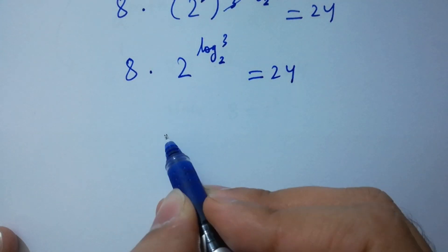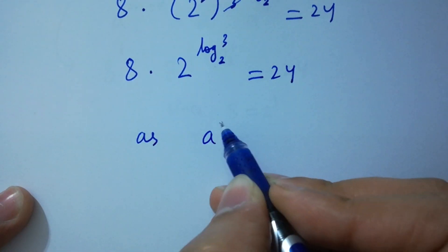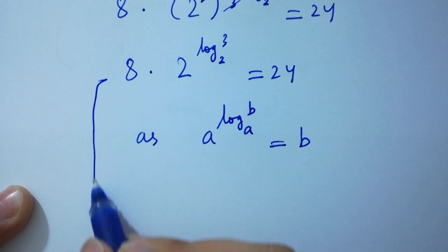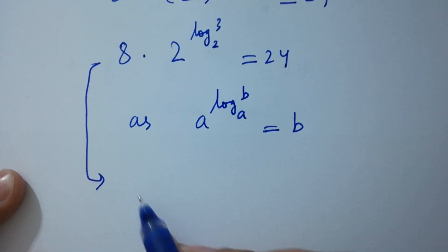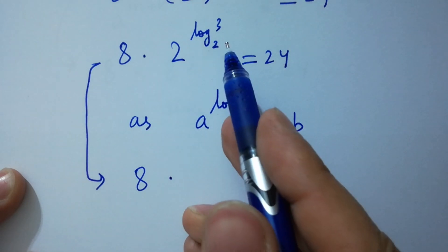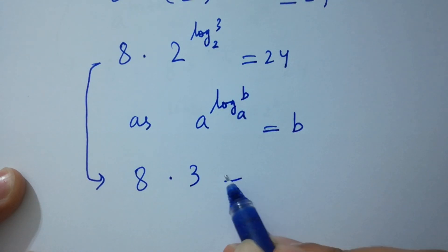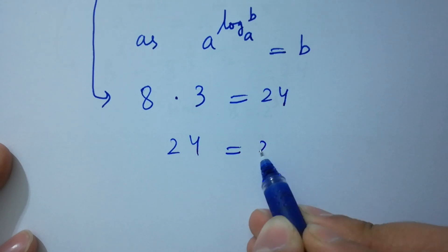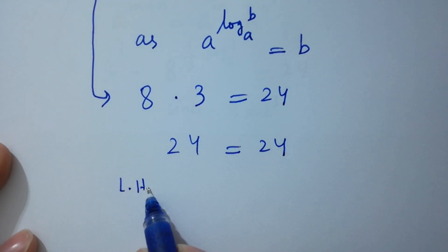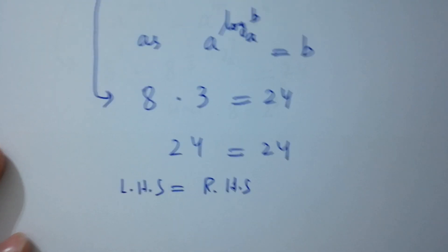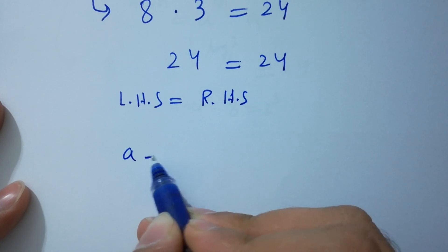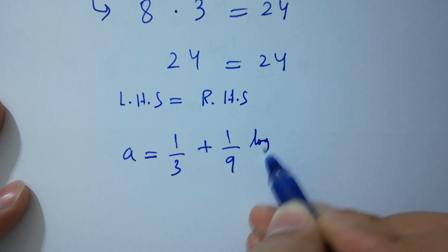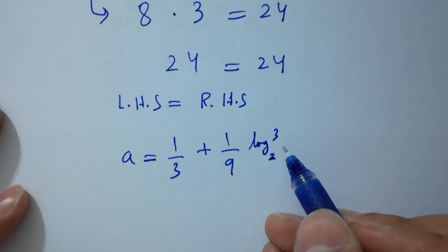As we know, a to the power log b to the base a equals b, so 2 to the power log 3 to the base 2 equals 3. Therefore 8 times 3 equals 24, which equals 24. Left hand side equals right hand side, which shows that the value of a equals 1 over 3 plus 1 over 9 log 3 to the base 2 satisfies the equation.